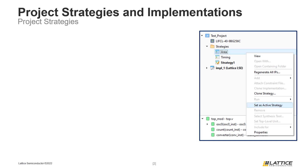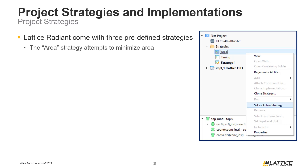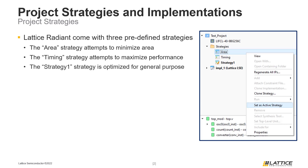The strategies available for use in a project will appear in the strategies folder of the file list tab. There are three predefined strategies that each Radiant project will begin with: the first strategy called Area optimizes a design to minimize area, the second called Timing attempts to optimize performance, and the third called Strategy One is the default strategy for new projects and attempts to optimize a design for general purpose.